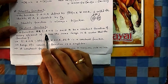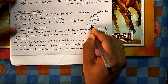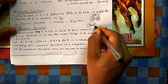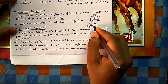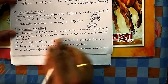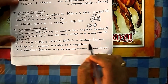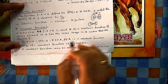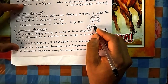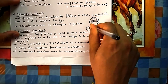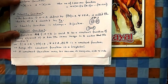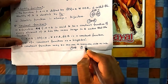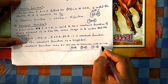A constant function always gives the same output regardless of input, for example f(x) = c (some constant like 4). A constant function can be one-one or many-one, and onto or into, depending on the domain and co-domain. The range of a constant function is always a singleton set — a set with only one element.